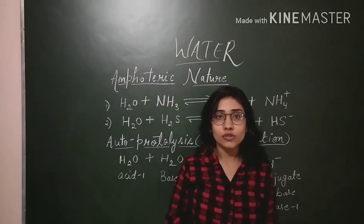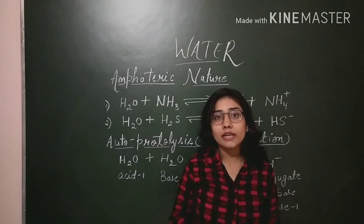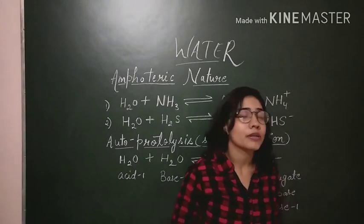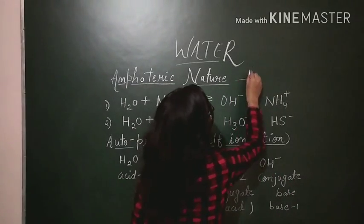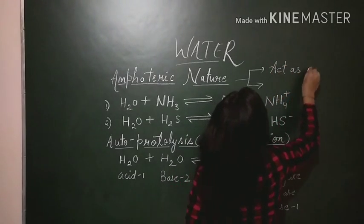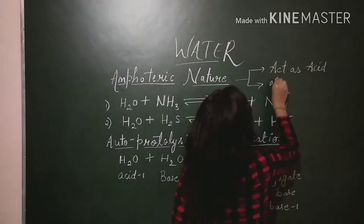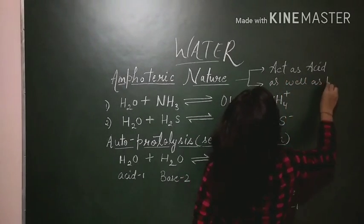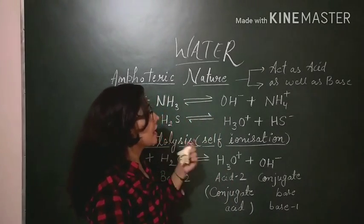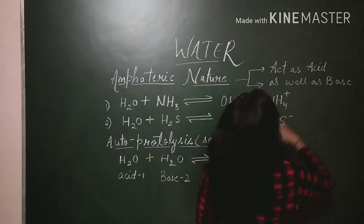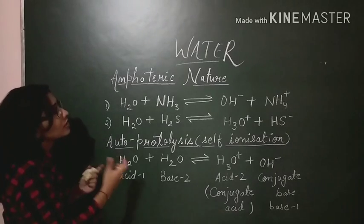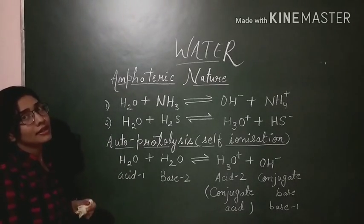Hello friends, welcome to Vipin Sharma Biology Tutorials. Our today's topic is amphoteric nature of water and autoprotolysis. Amphoteric nature means when a chemical species is able to act as an acid as well as a base. If a chemical species is able to act as an acid and as well as a base, it is termed as amphoteric in nature.